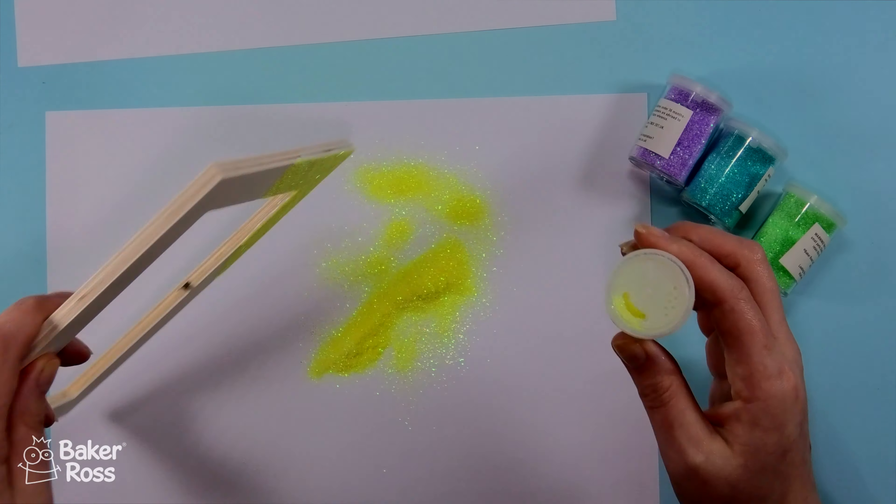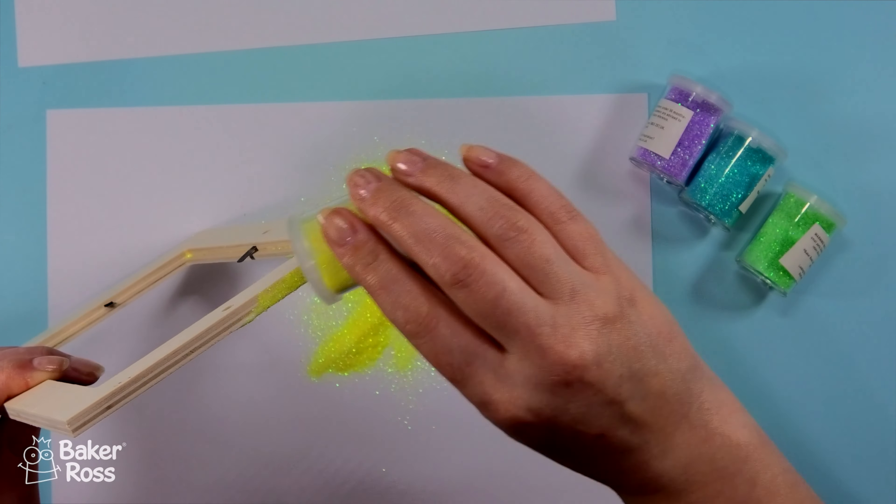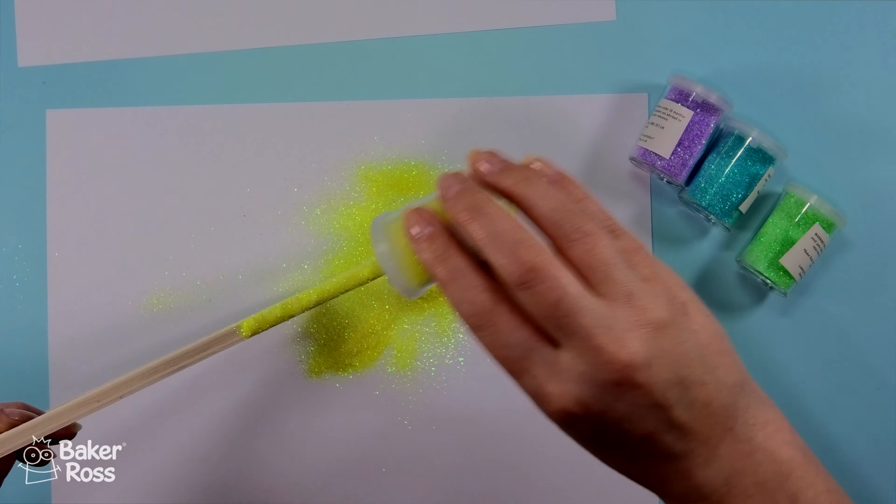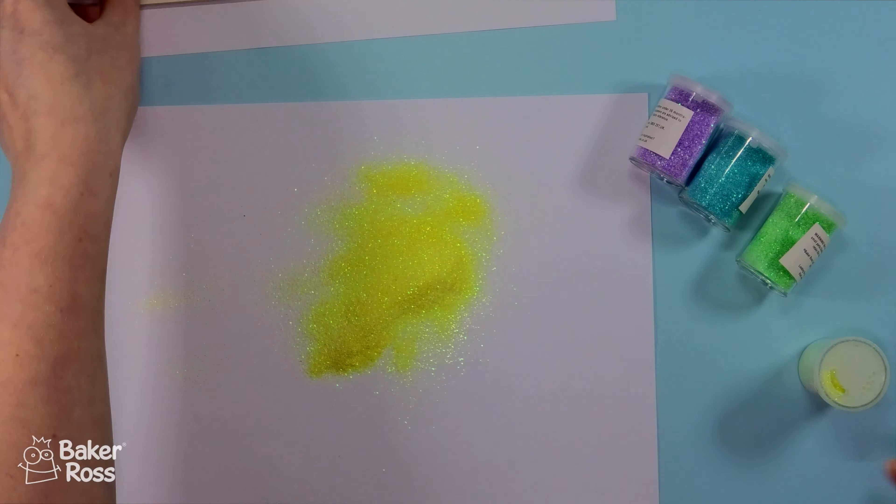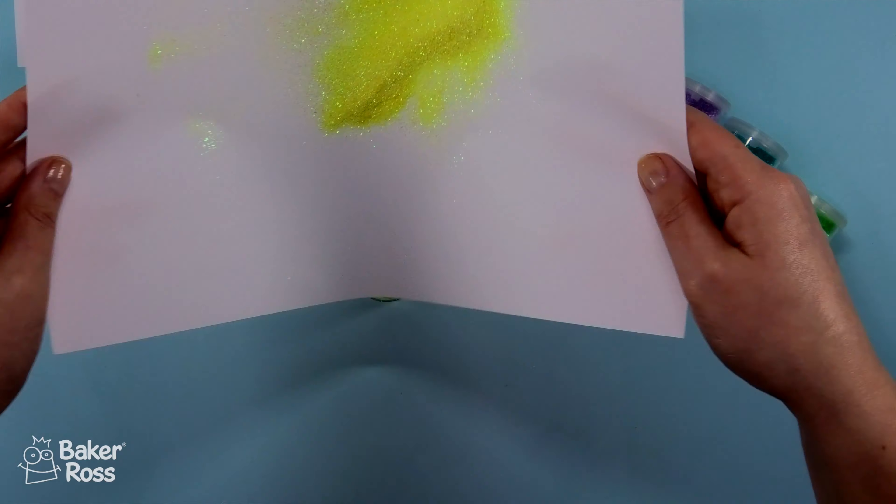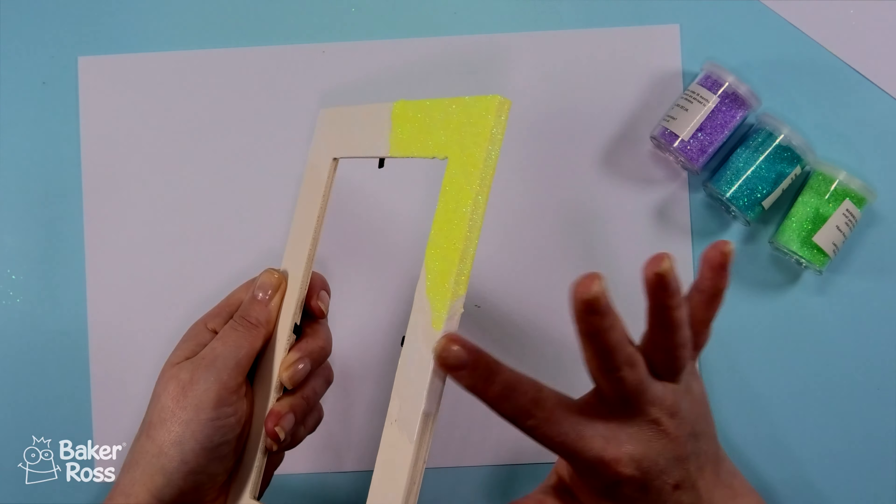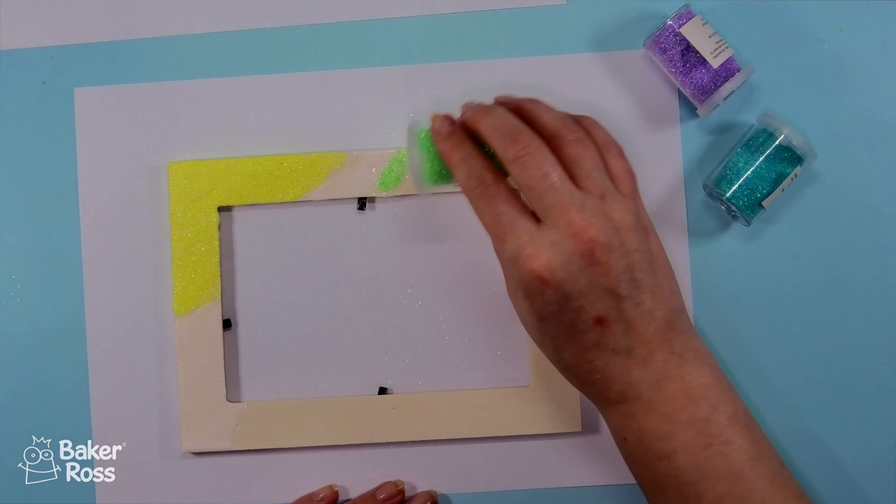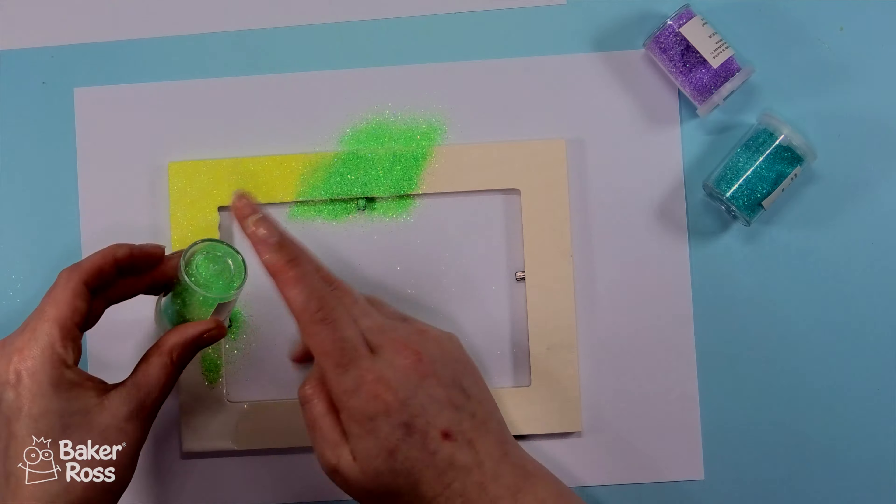You'll notice that I switch between a scrap piece of paper for when I'm working with the glue and a scrap piece of paper to catch all of my glitter. This means I can pour the glitter over the top of the frame and let it land on that dry piece of paper and then just tip any of the excess back into the container.